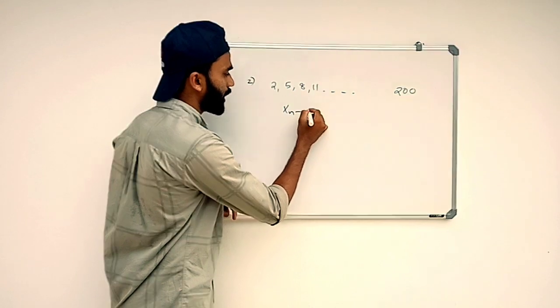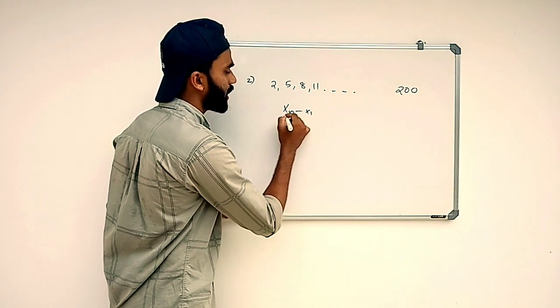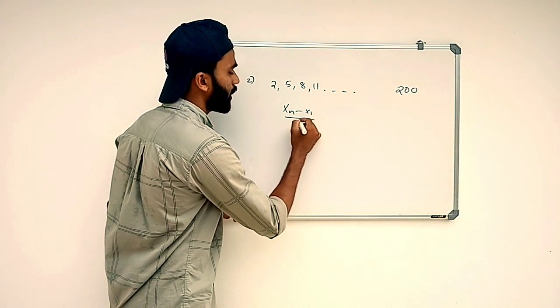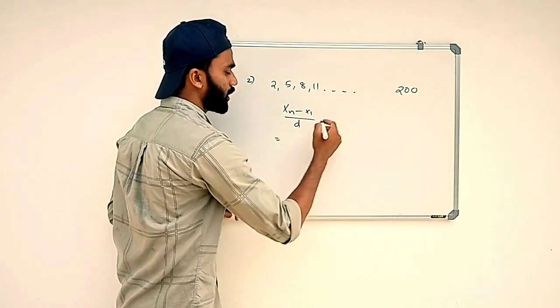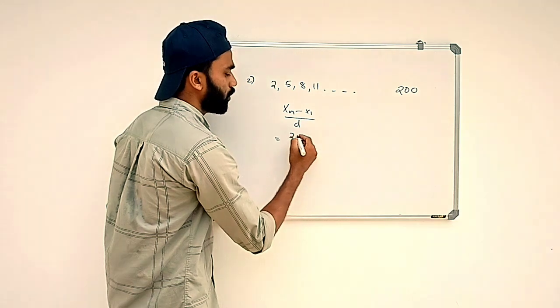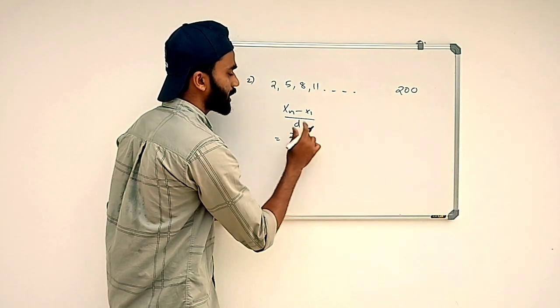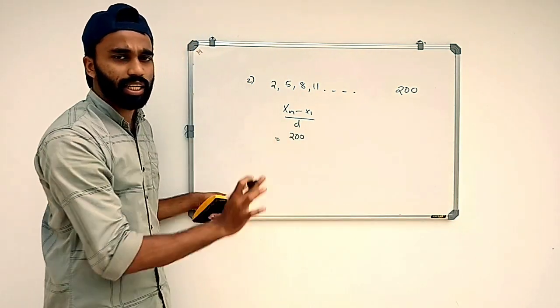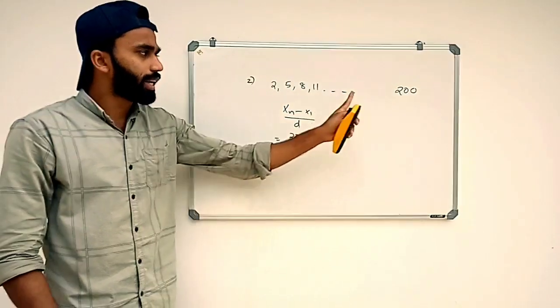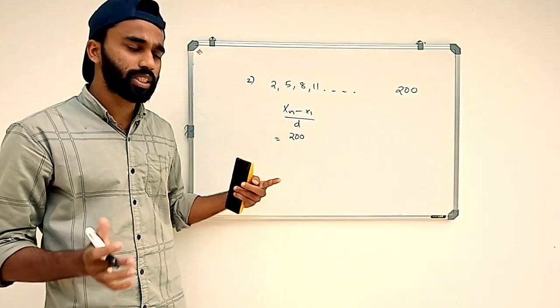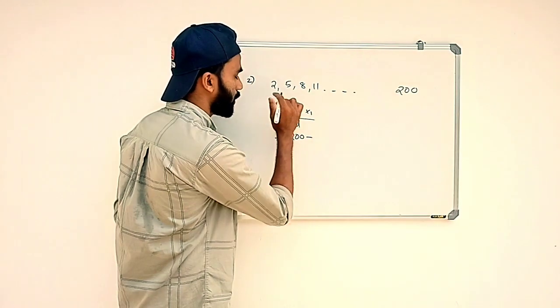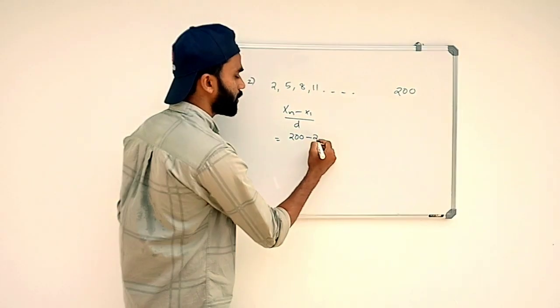Xn minus X1 divided by D. Xn minus x2 divided by 200. We have to take this equation. How many differences is that?